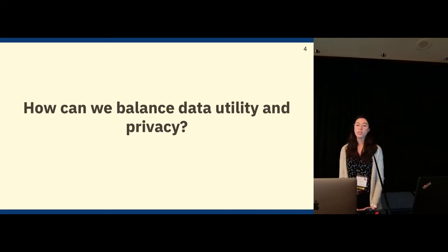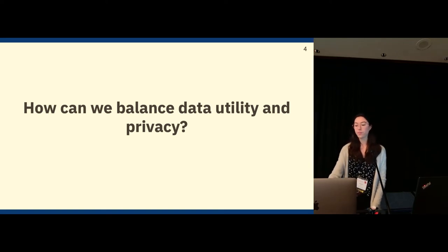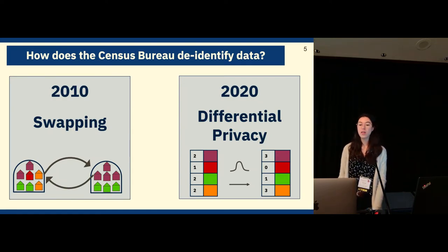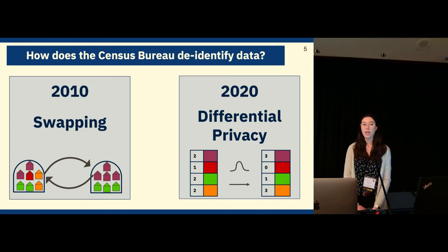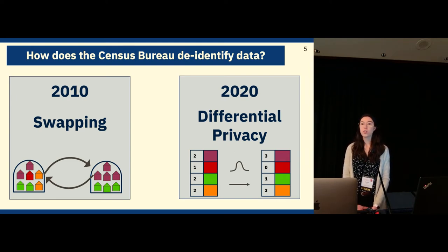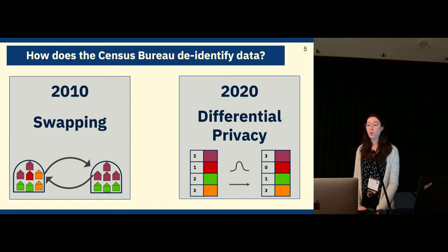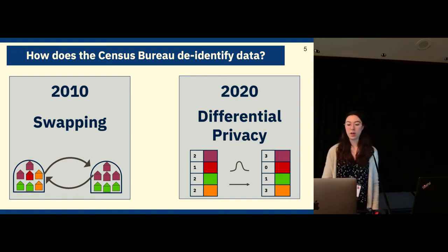So given the importance of both data utility and privacy in the census, we have to answer this question: how can we balance data utility and privacy? The Census Bureau has used a variety of methods. In 2010, it used a method called swapping, which was later found to have privacy concerns. So in 2020, the Census Bureau switched to differential privacy. We'll tell you a little about what each of these methods means in the context of the census.